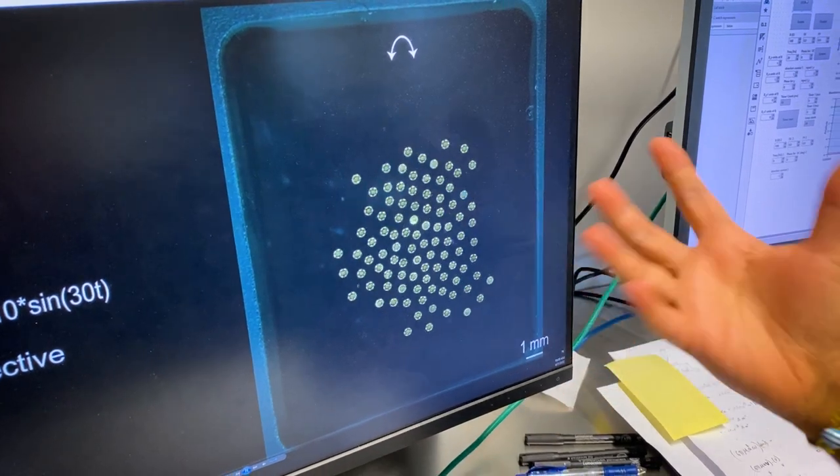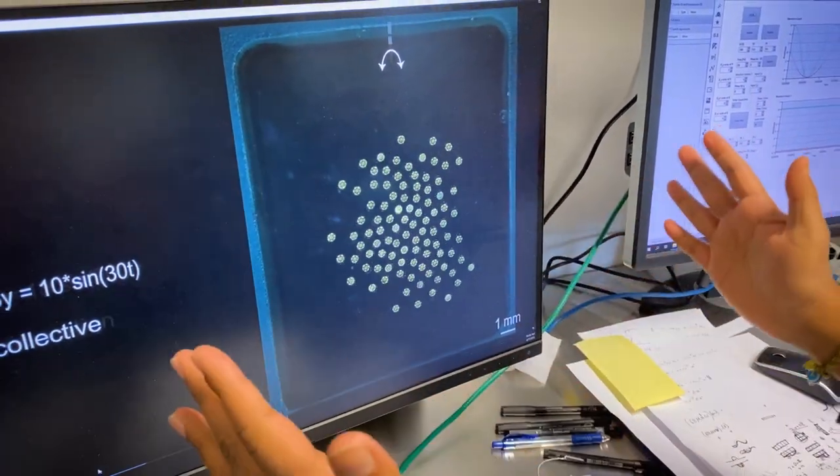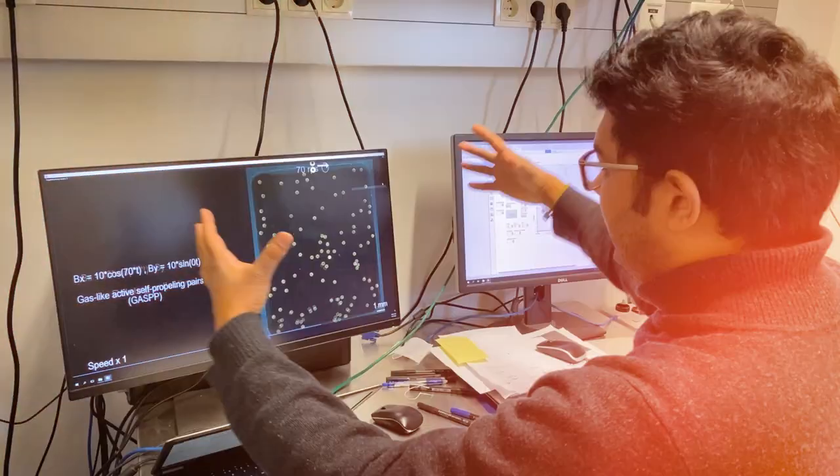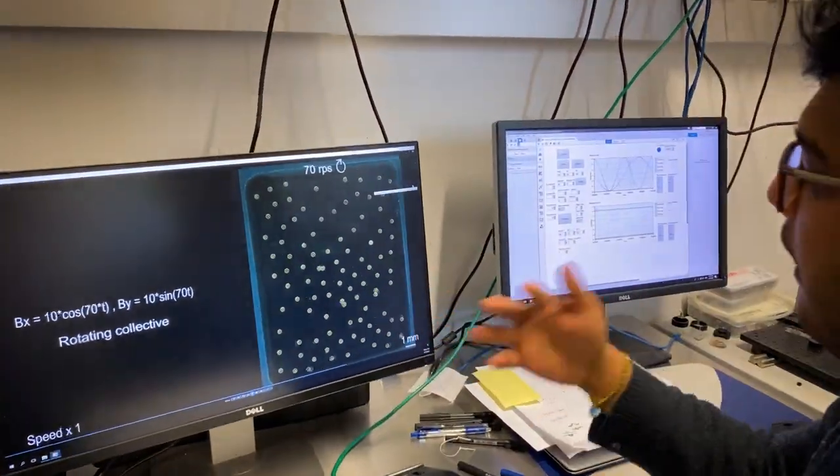They start dancing as a group and then when we want, they can also come together and form a straight line. We can also bring them together as a single group.